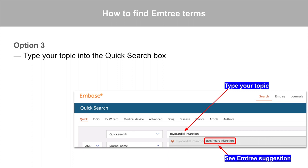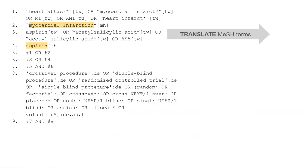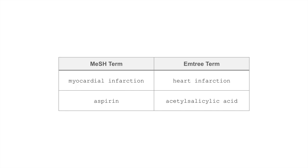Option 3: Type your topic into the quick search box. If applicable, Embase will automatically suggest an EmTree term. Let's translate the MeSH terms in our strategy — myocardial infarction and aspirin. Using the quick search box, I found that the corresponding EmTree terms are heart infarction and acetylsalicylic acid.